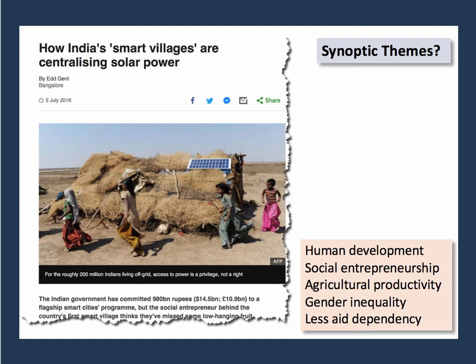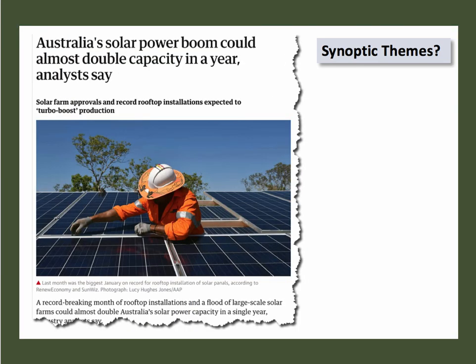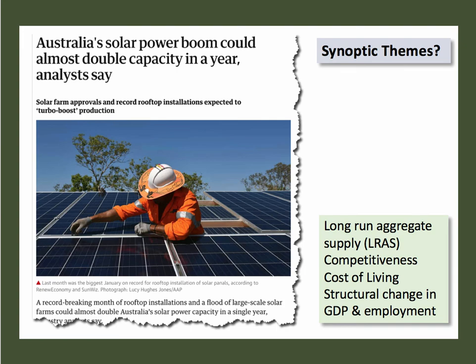Australia's solar power boom could almost double capacity in a year — here's a really good example of where investment in solar power has significant economic effects. The synoptic themes include linking this to long-run aggregate supply or shifts in the PPF. The extent to which a country scaling up its renewable energy can become more cost competitive over time, particularly if it can wean itself off more expensive fossil fuels. What are the consequences for living costs in the short and long term? And there are potentially big changes to the structural composition of Australian GDP — perhaps a movement away from coal mining and changes in the pattern of employment.